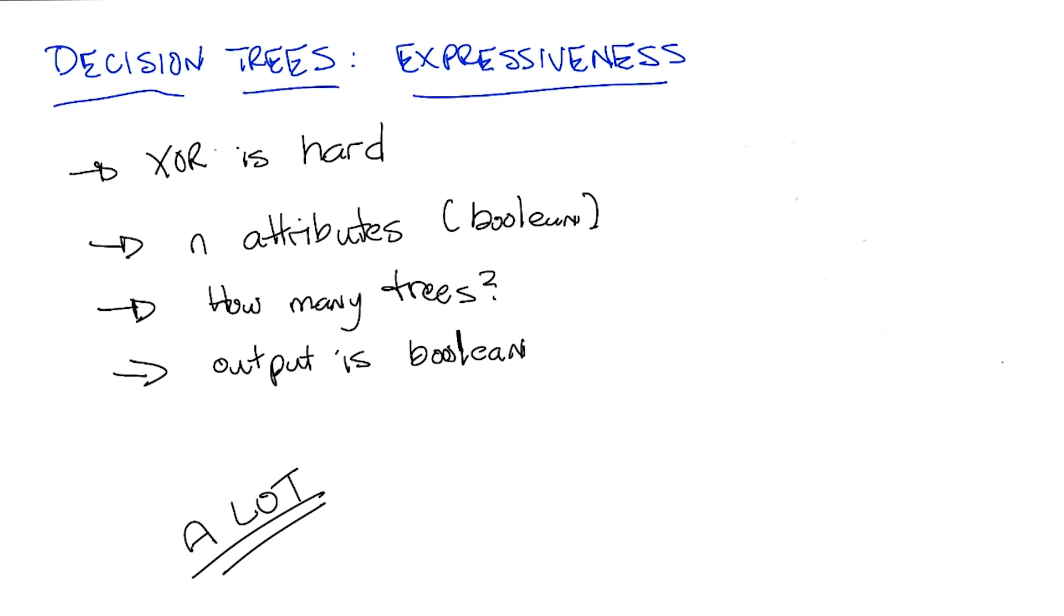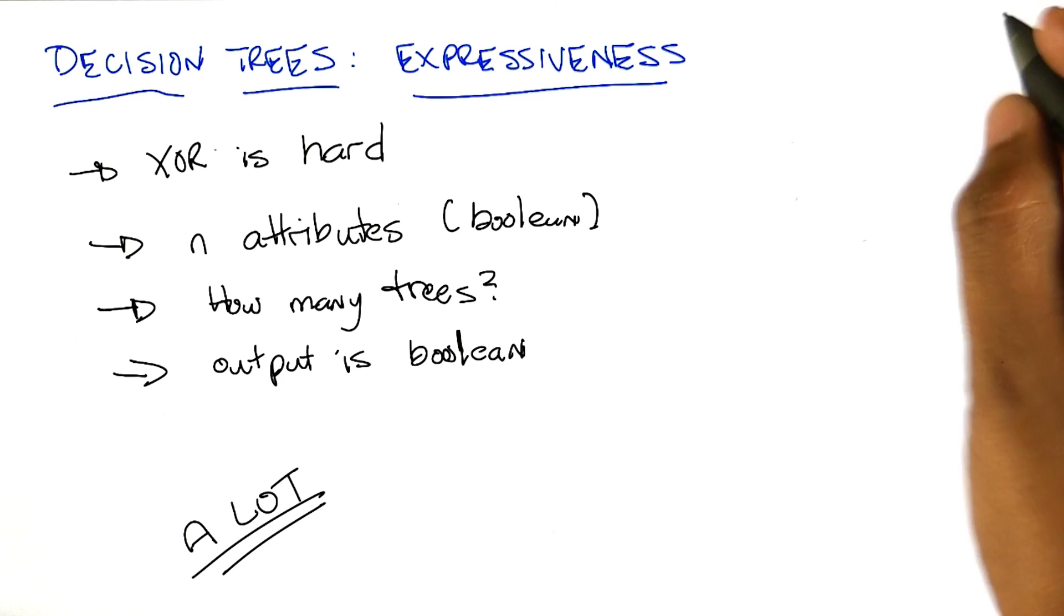So we have Boolean inputs and we have Boolean outputs. So this is just like AND, it's just like OR, it's just like XOR. So whenever we're dealing with Boolean functions, we can write down a truth table. So let's think about what the truth table looks like in this case.